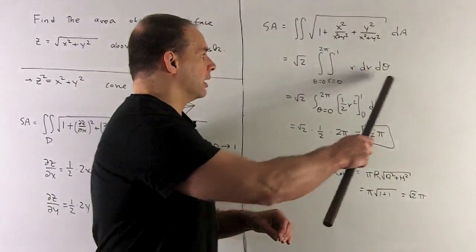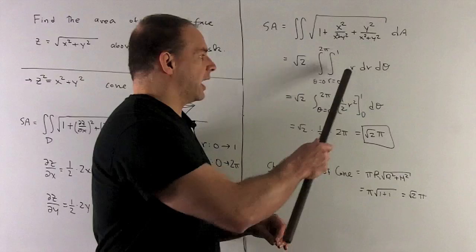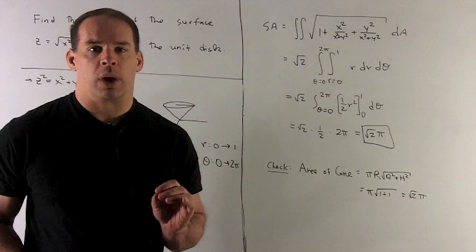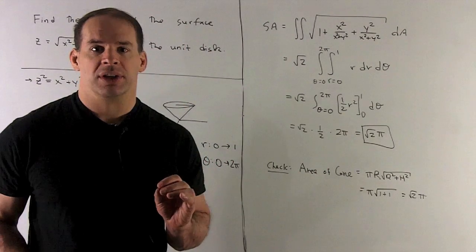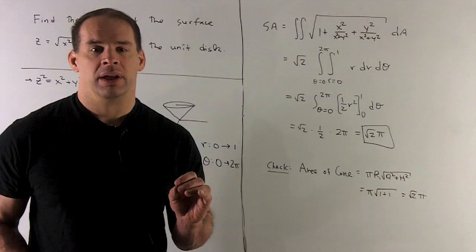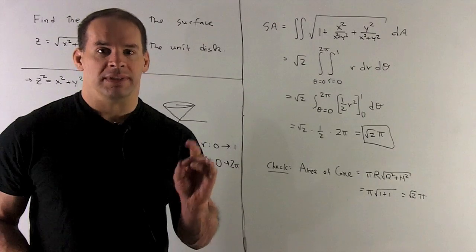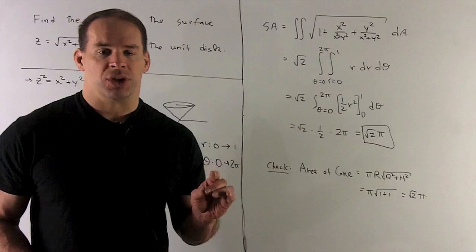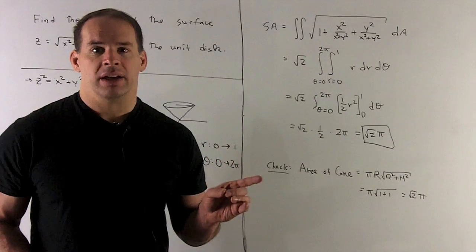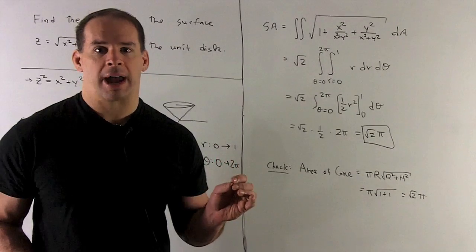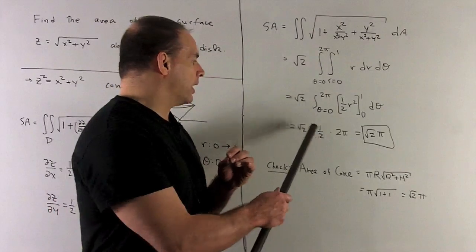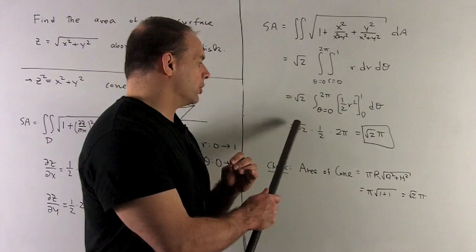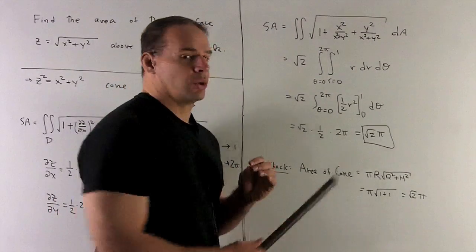So we calculate this. Take the anti-derivative of r, gives you 1 half r squared. Put in your 1 and 0, take their difference, that gives you a 1 half. Then you need to take the integral d theta. Theta goes from 0 to 2 pi, so d theta goes to theta, 2 pi minus 0 or 2 pi. You're left with 1 half, 2 pi, and then your original square root of 2. It gives you square root of 2 pi.